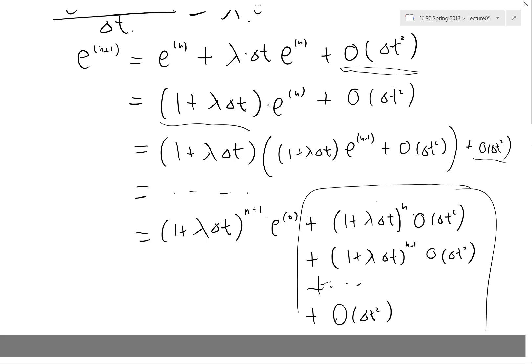So if I want you to plot on the real axis lambda, what is the region in the real axis for which the scheme is stable? How would you do that?